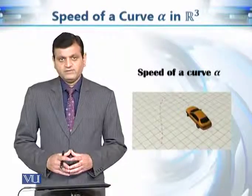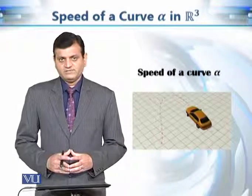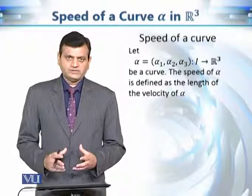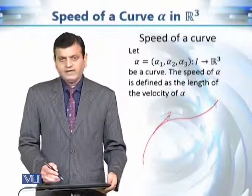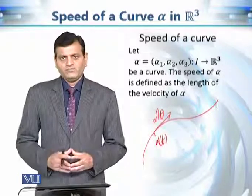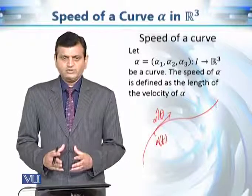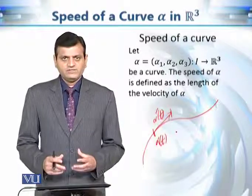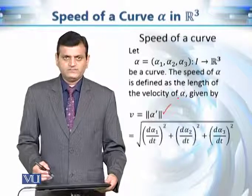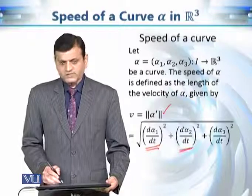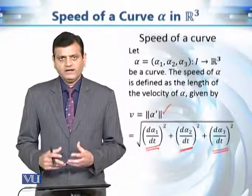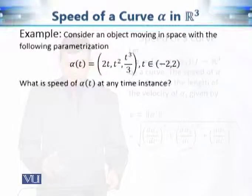We begin with finding the speed of a curve at any particular parameter value t. We have already discussed the velocity vector: given any curve, we can calculate the velocity vector at any point t. It has point of application α(t), and its components are found by differentiating the three components of α(t). From physics, the magnitude or length of this velocity vector gives us the speed — computed as the square root of the sum of squares of each component of α'(t).